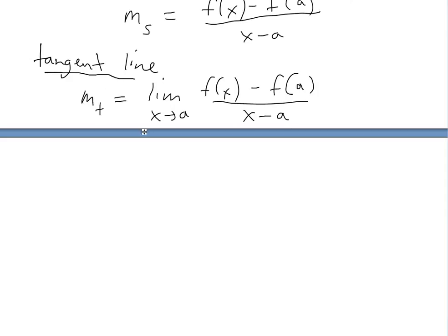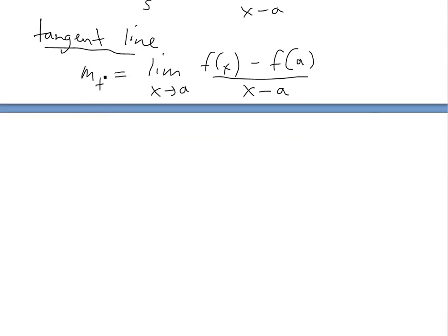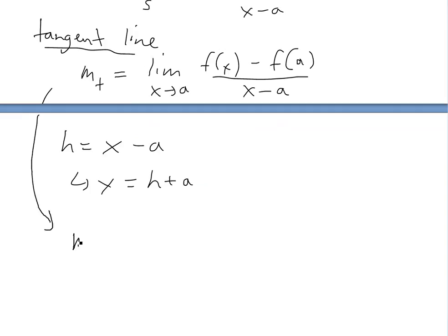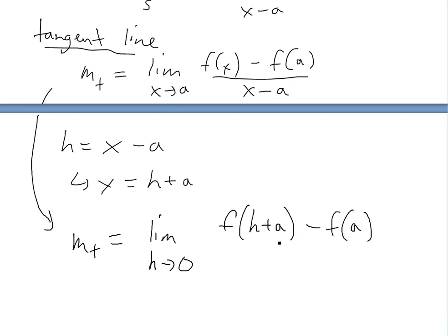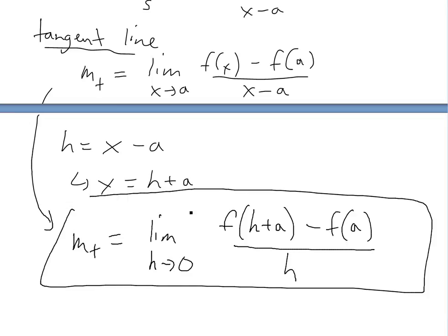If we were to write it similar to our definition of derivative: if you let h equal x minus a, then rearranging gives x equals h plus a. Then m_t equals the limit as h approaches zero of f of h plus a minus f of a, all over h. As x approaches a, h approaches zero, since a minus a equals zero. This is essentially the definition of derivative.